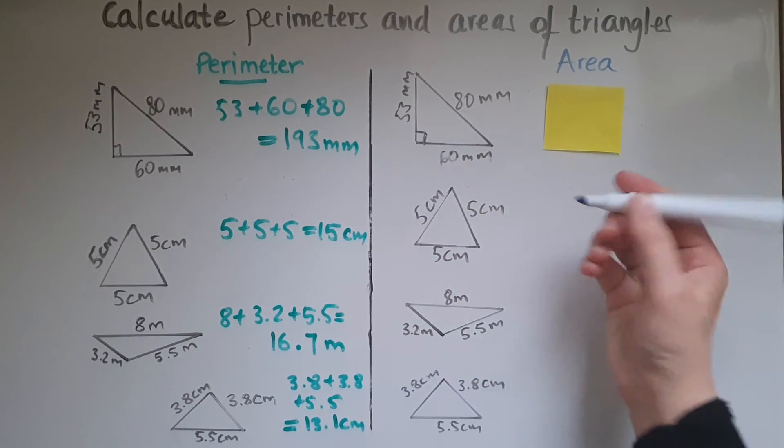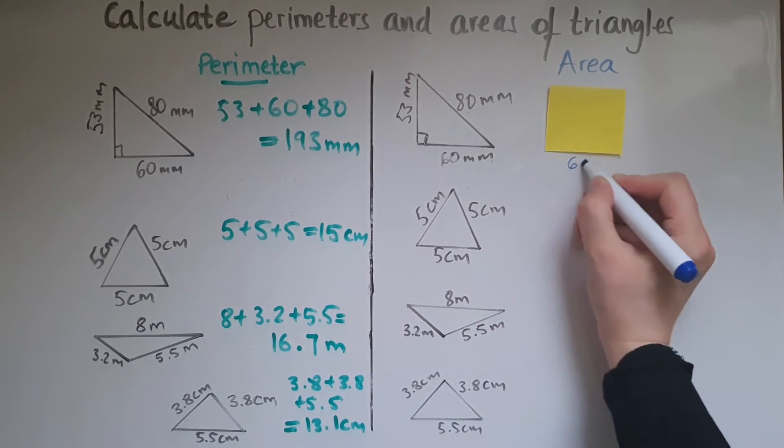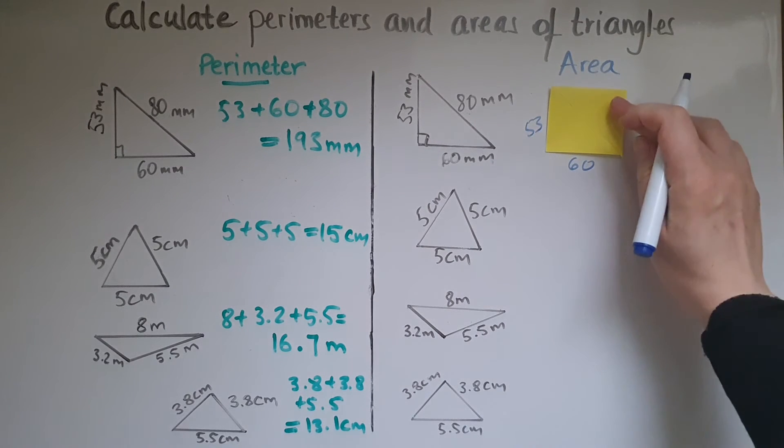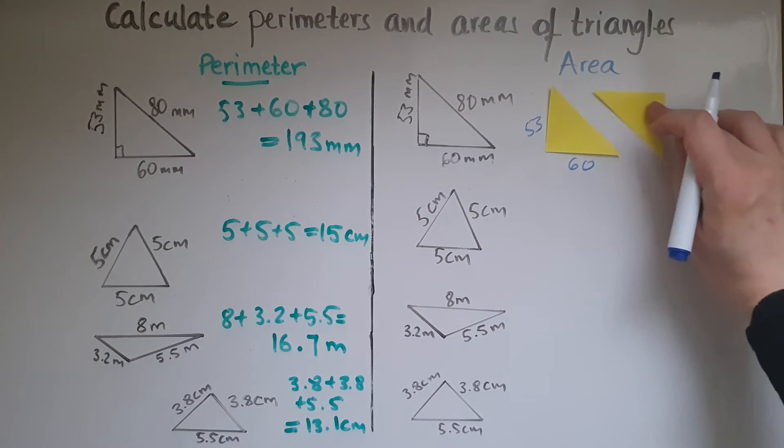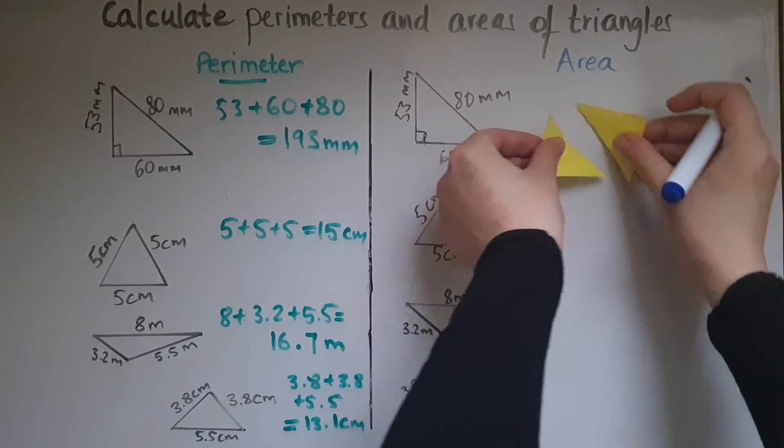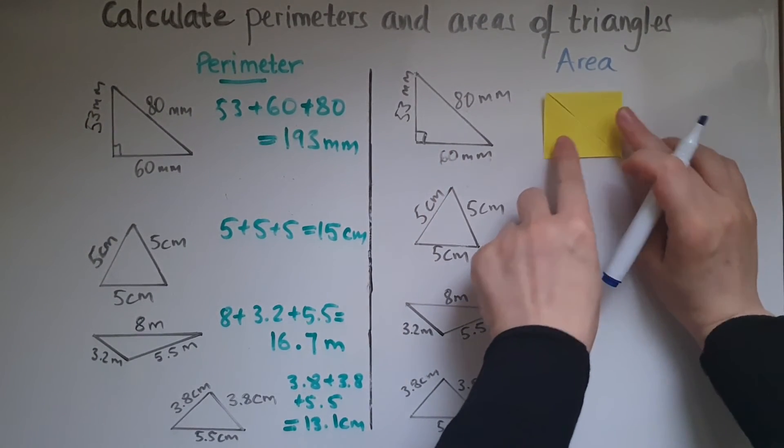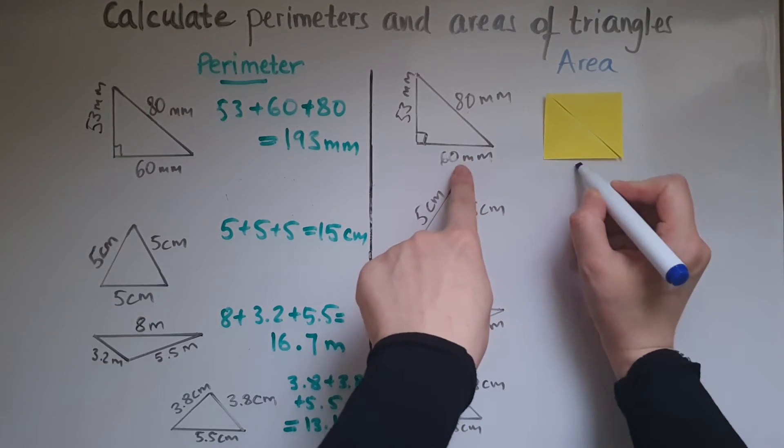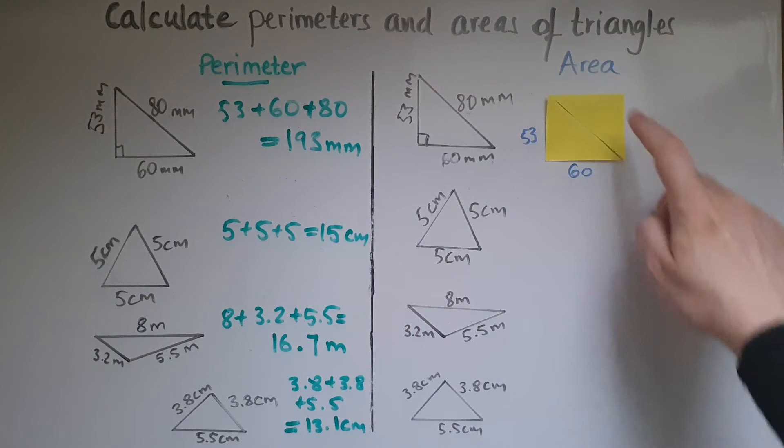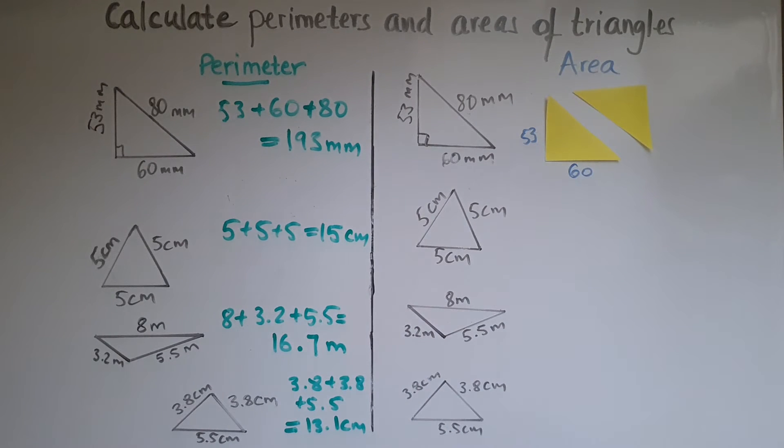So the area of the triangle is half the area of the rectangle with the same length and width. I could just multiply the 60 by 53 and then divide it into two parts. So this means that I could multiply 60 by 53 and then divide it by 2 to get the area of the triangle.